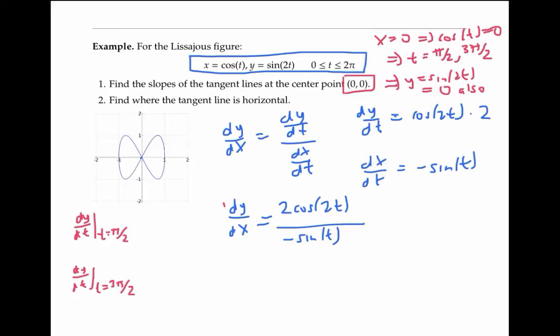Plugging into our formula for dy/dx, we get 2cos(π) / -sin(π/2), which simplifies to positive 2.